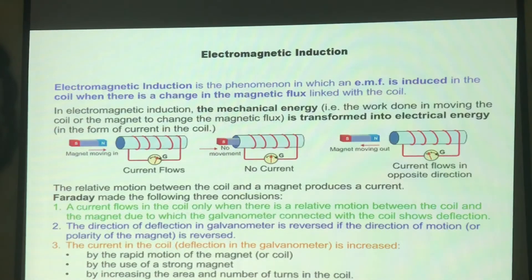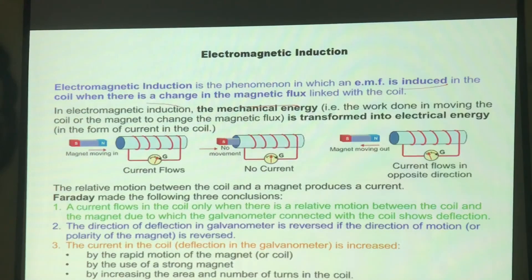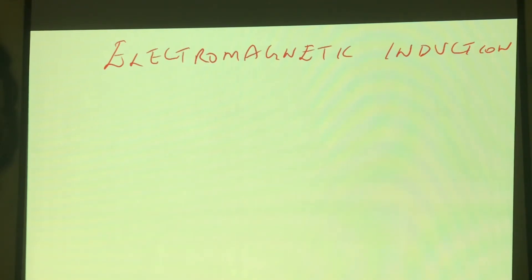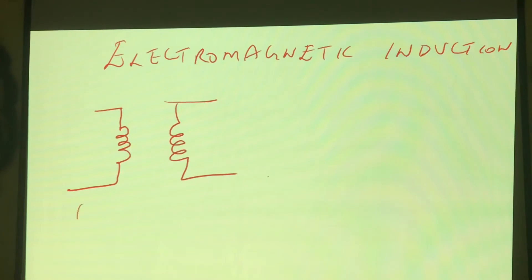Now coming to electromagnetic induction. If we just discuss that 'EMF is induced in the coil when there is a change in magnetic flux,' we will never really learn about this. So let me explain it practically. Draw two coils — coil A and coil B.